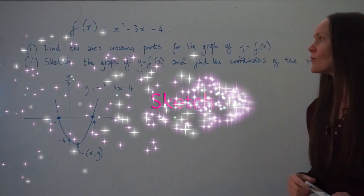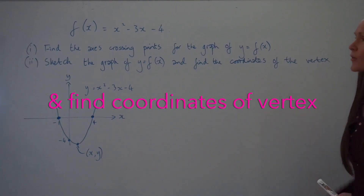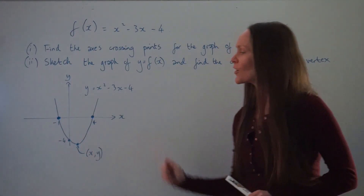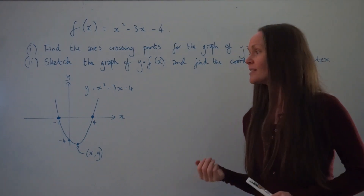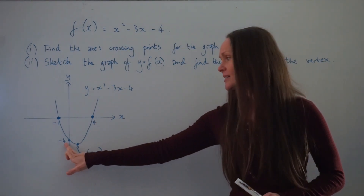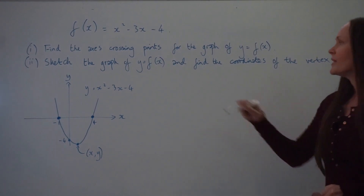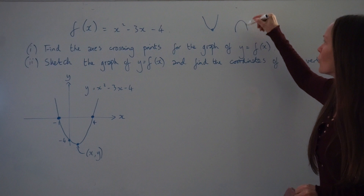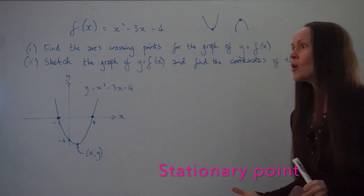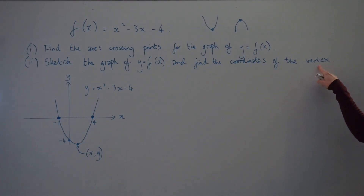In part 2, it says sketch the graph of y = f(x) and find the coordinates of the vertex. I've done a neat sketch showing the points of intersection we just worked out — where the graph intersects the x-axis and the y-axis. The vertex is either the minimum point or the maximum point on the graph. It might also be called the stationary point or the turning point — they all mean the same thing as finding the vertex.